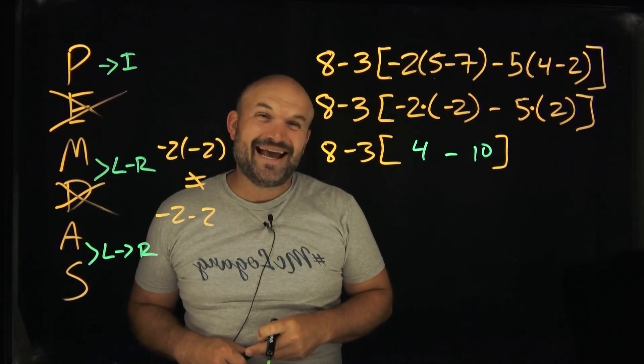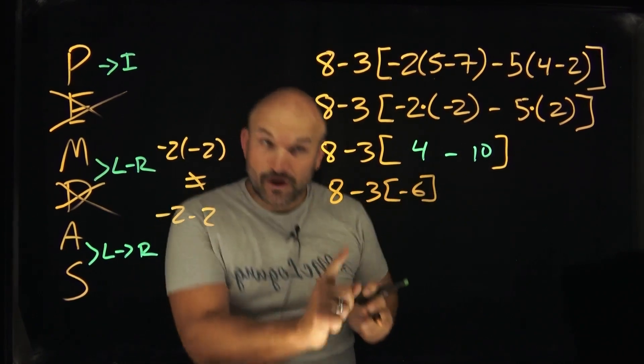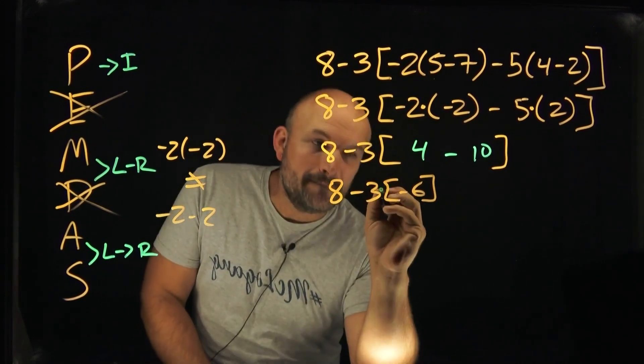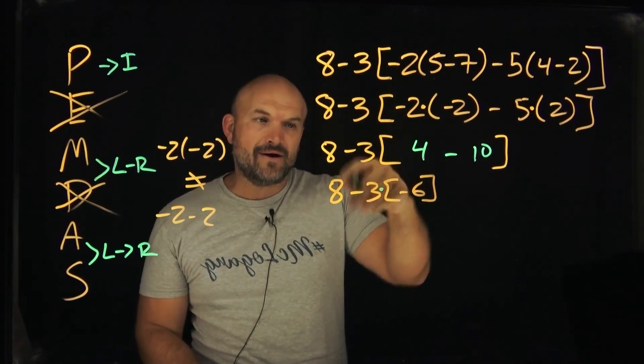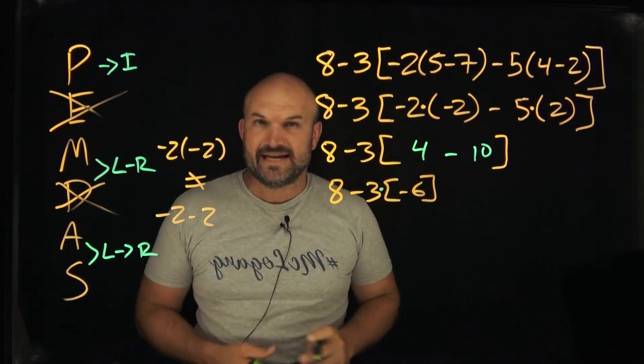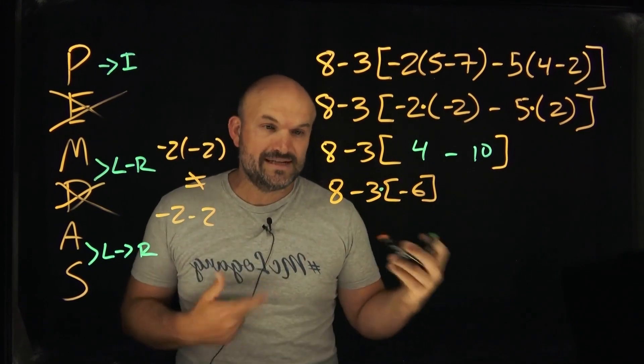So now 4 minus a negative 10 is going to be a negative 6. Again notice here I am preserving that bracket because again this 3 is being multiplied by that negative 6. Now I can just go ahead and multiply that negative 3 times negative 6. That is going to be a positive 18, and then now I can add a positive 18 to an 8 which is going to give me a 26.